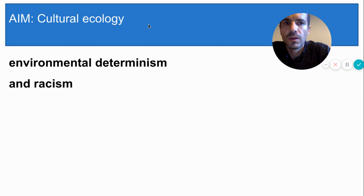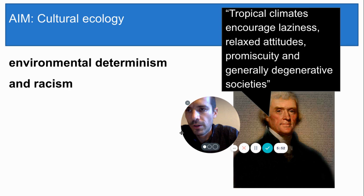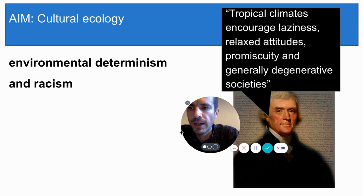Here is Thomas Jefferson writing in the early 1800s: 'Tropical climates encourage laziness, relaxed attitudes, promiscuity, and generally degenerative societies.' The tropical climates he's referring to are those non-white places like Africa where his slaves had been taken from. So here he's essentially saying that black people are lazy and degenerate because they come from places where the weather is too warm.